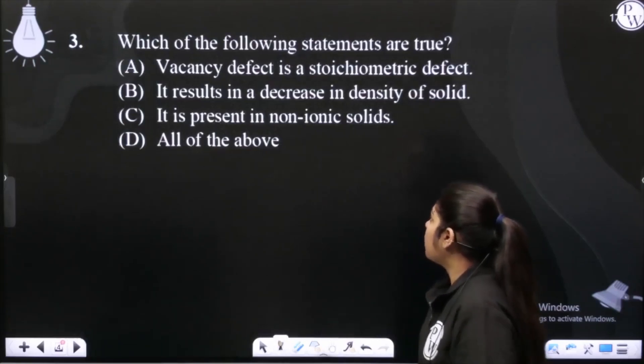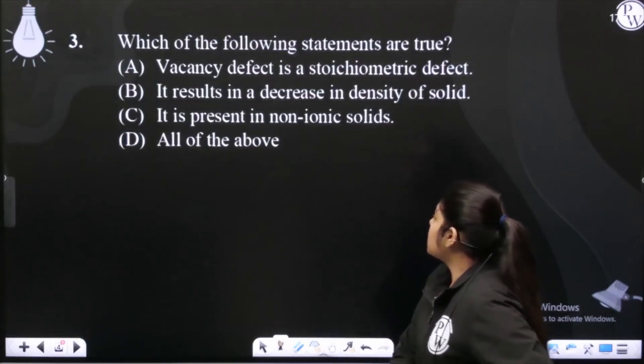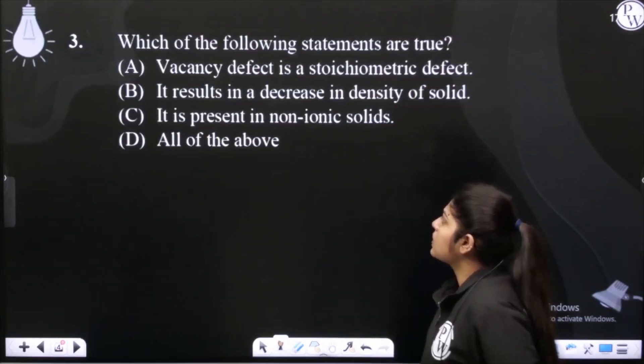Which of the following statements are true? Vacancy defect is a stoichiometric defect. It results in a decrease in density. It is present in non-ionic solids. So all of the above statements are correct.